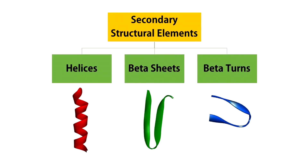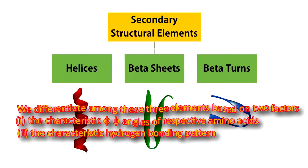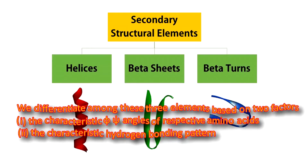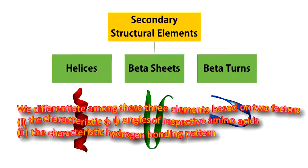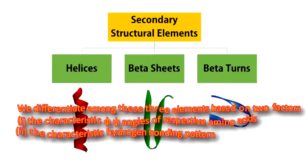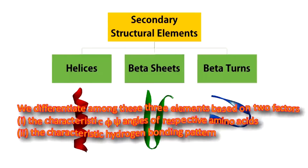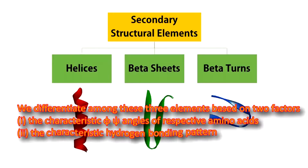Three general types of secondary structure elements have been identified: alpha helices, beta sheets, and beta turns. We differentiate among these three elements based on two factors: one, the characteristic phi-psi dihedral angles of the respective amino acids, and two, the characteristic hydrogen bonding pattern.